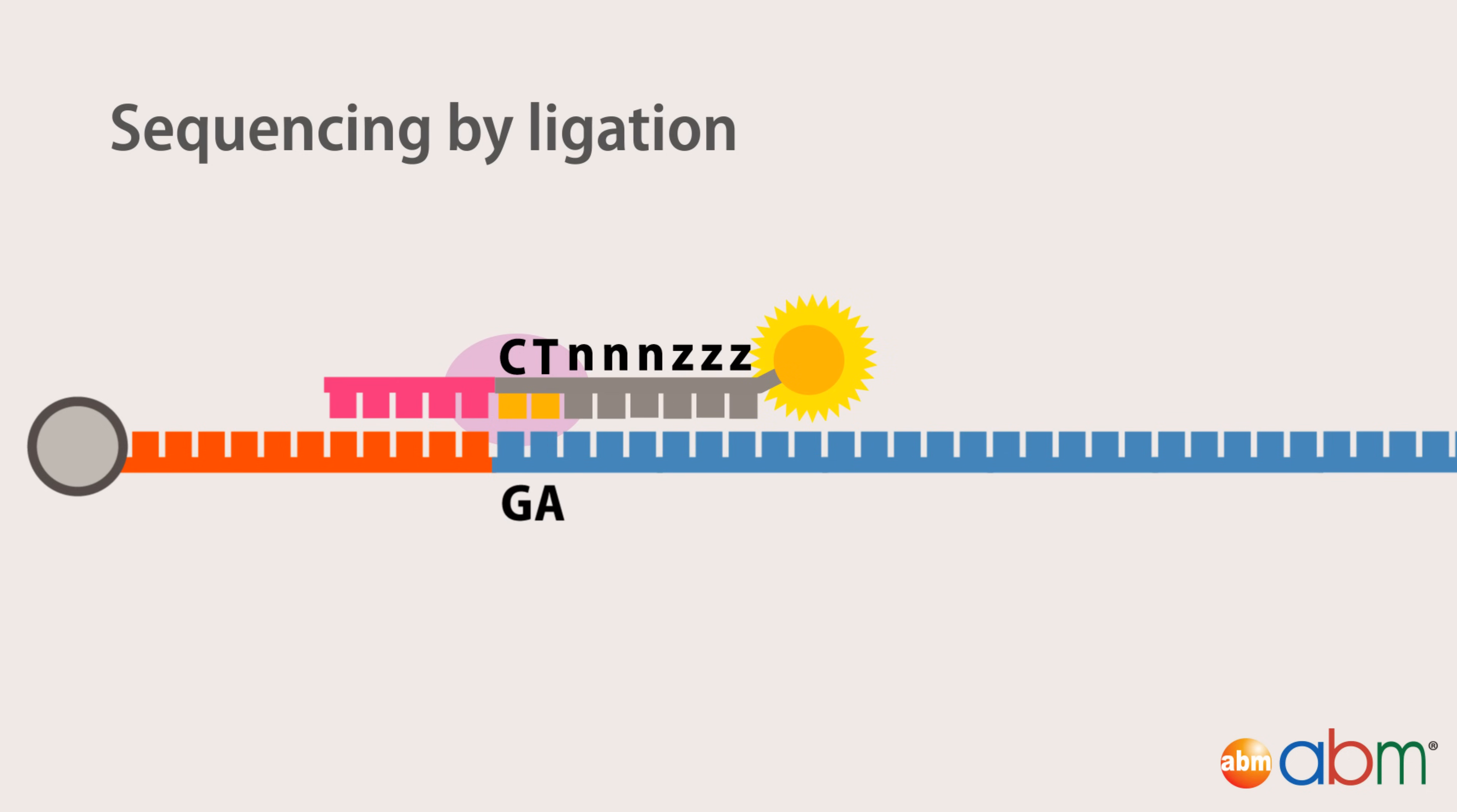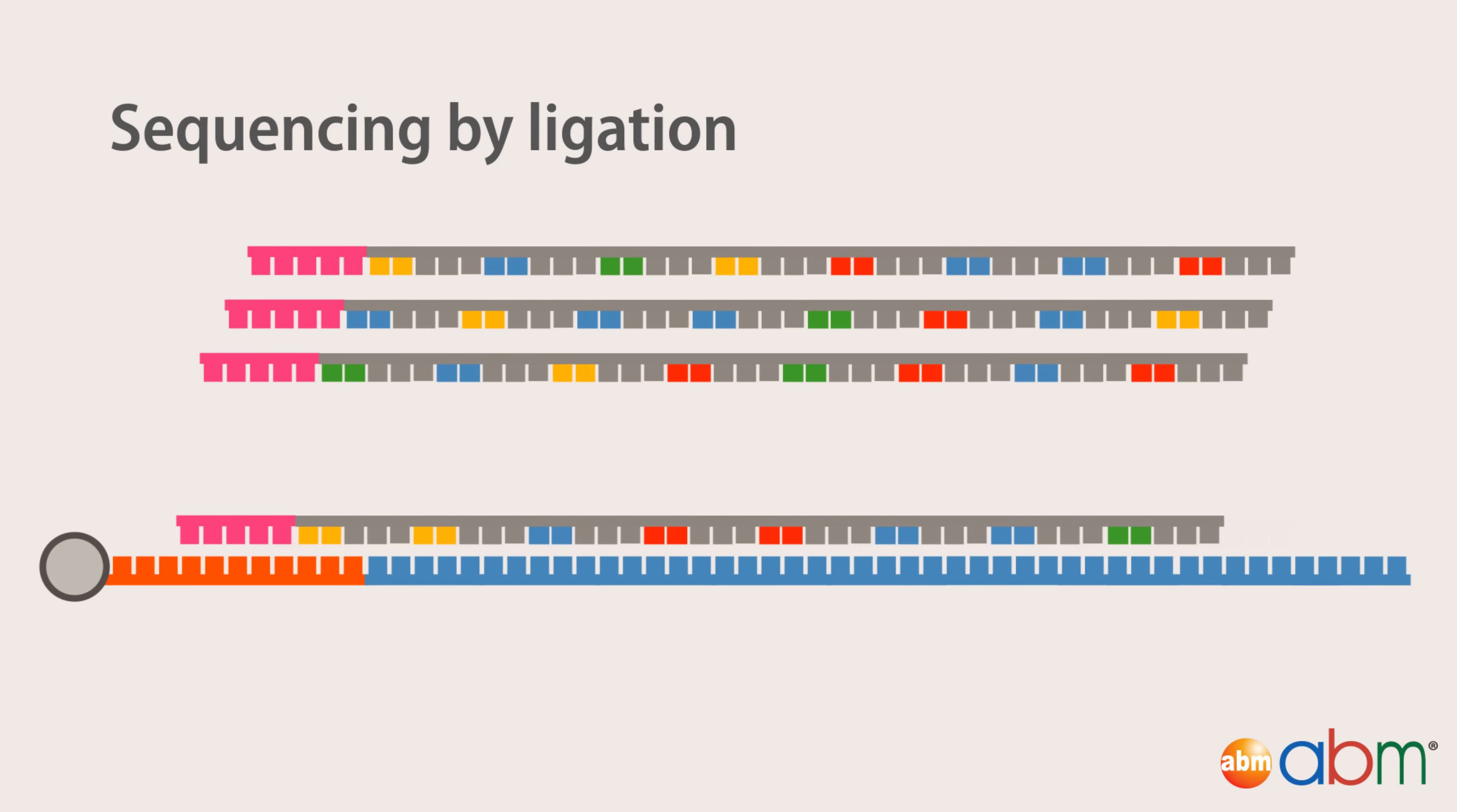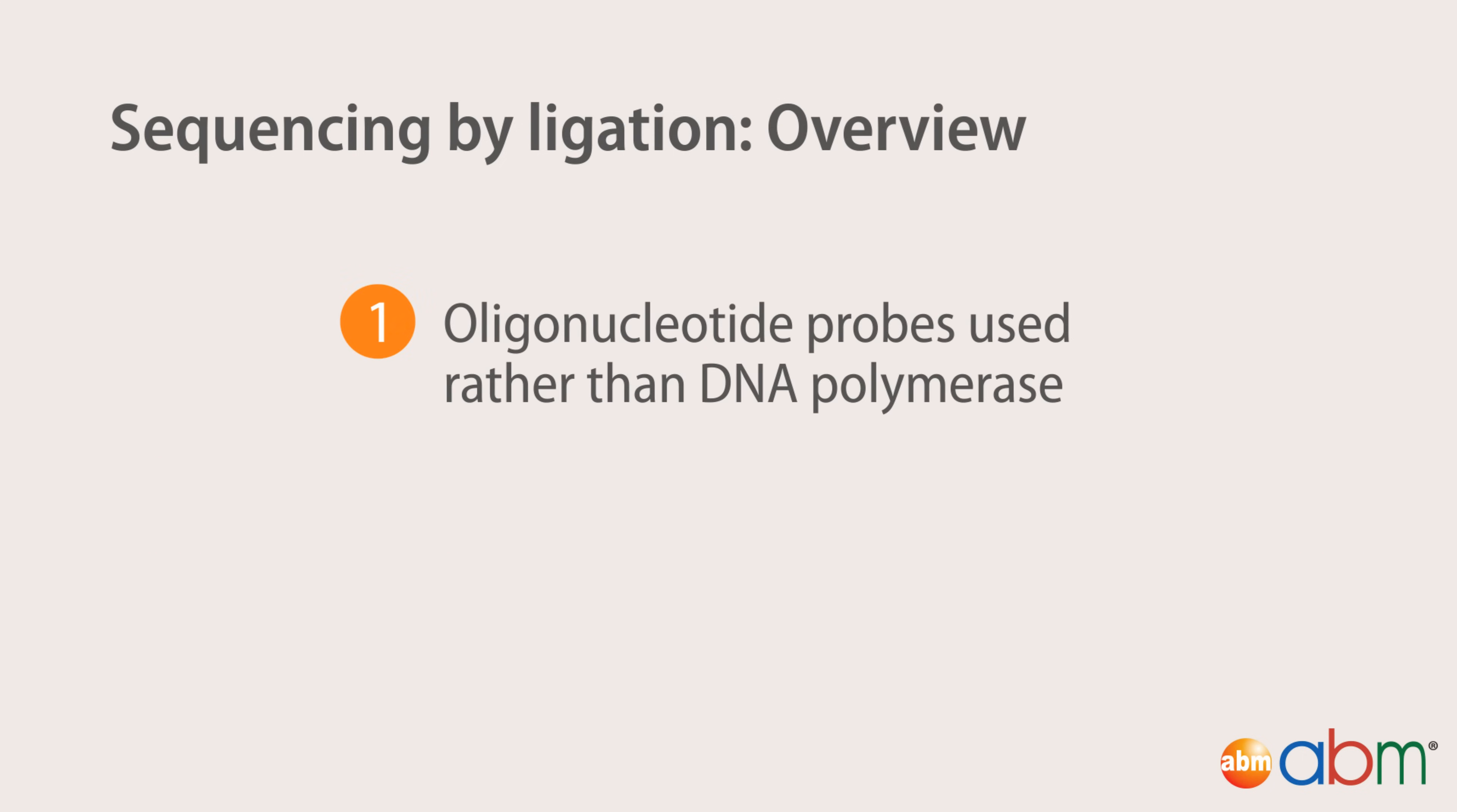After that, the fluorescent signal, along with the last three bases of the octamer probe, are cleaved, and then the next cycle commences. After approximately seven cycles of ligation, the DNA strand is denatured and another sequencing primer, offset by one base from the previous primer, is used to repeat these steps. In total, five sequencing primers are used. The major disadvantage of this technology is the very short sequencing reads generated.